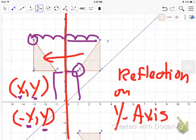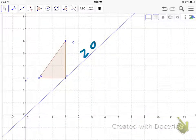So (x, y) becomes (-x, y) to reflect on the y-axis.